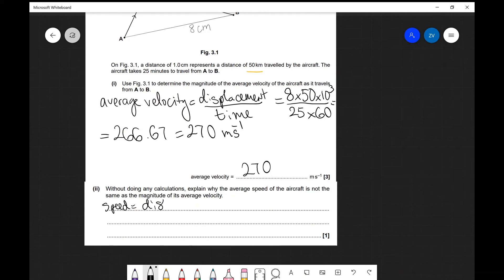Well remember speed is distance over time so the average speed is distance over time. Now in this case the distance and the displacement are not the same so the distance is different compared to the displacement.